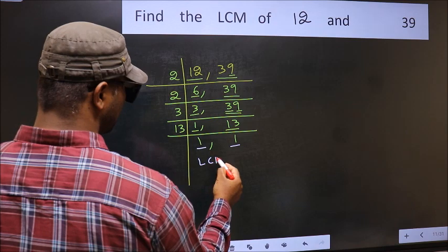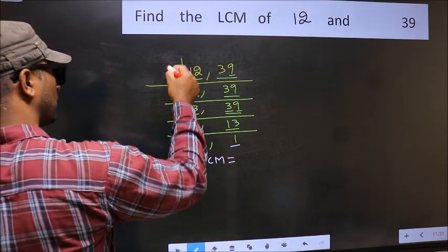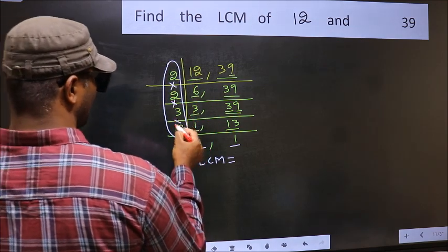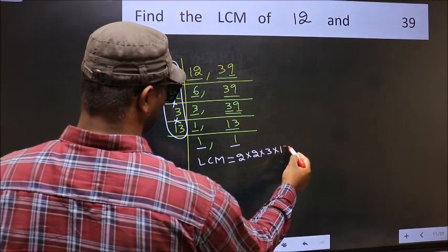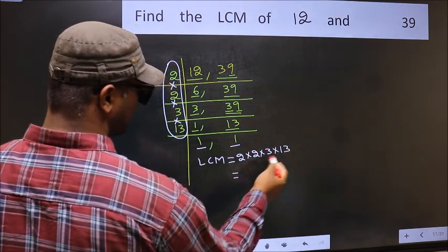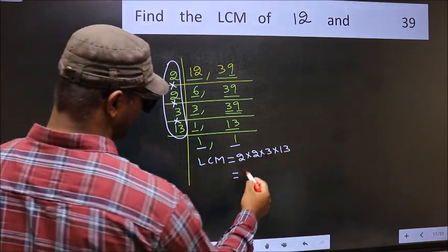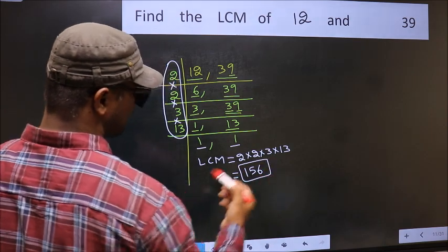So our LCM is the product of these numbers. That is 2 into 2 into 3 into 13. When we multiply these numbers, we get 156 as our LCM.